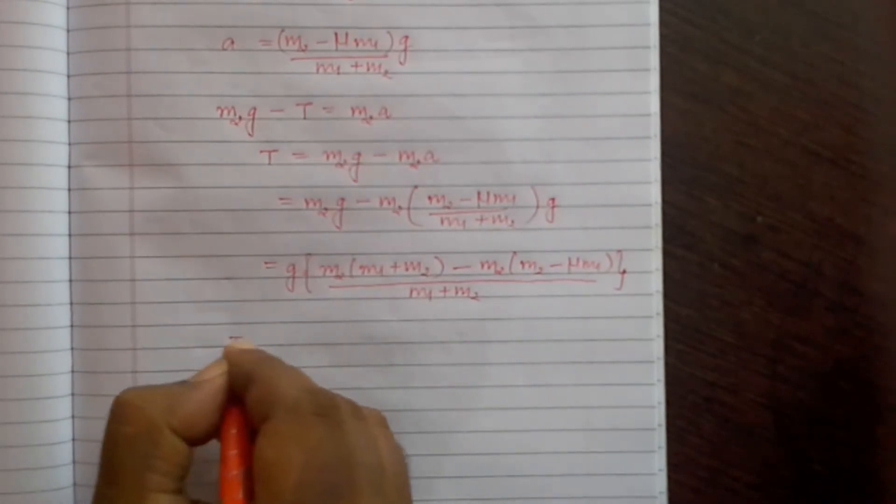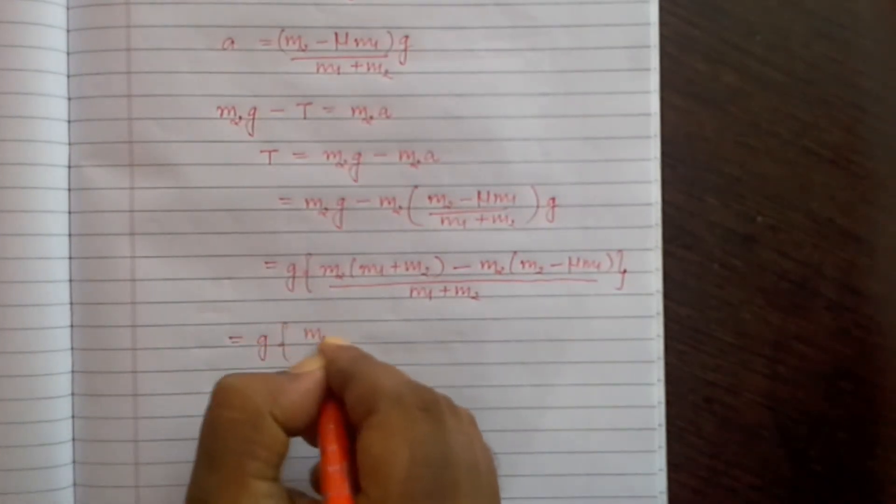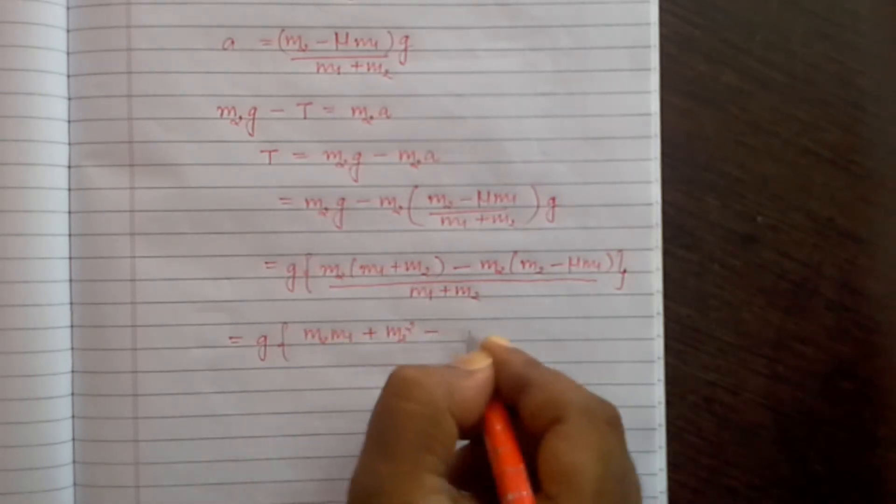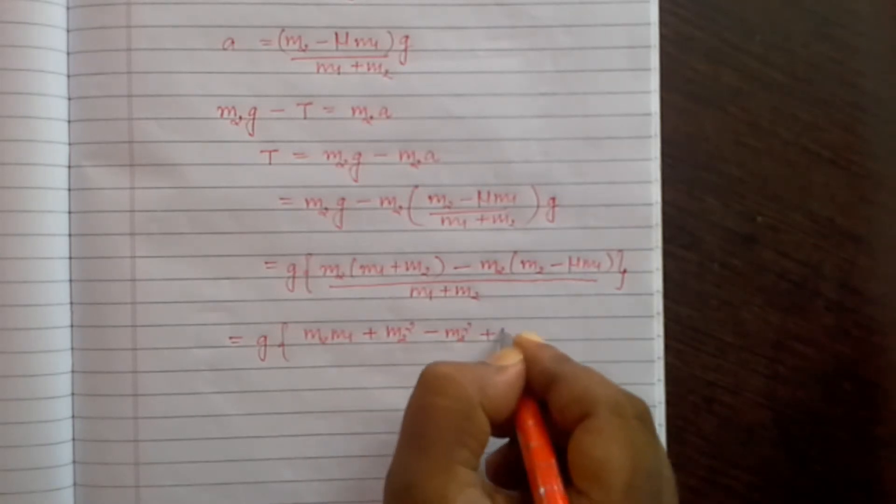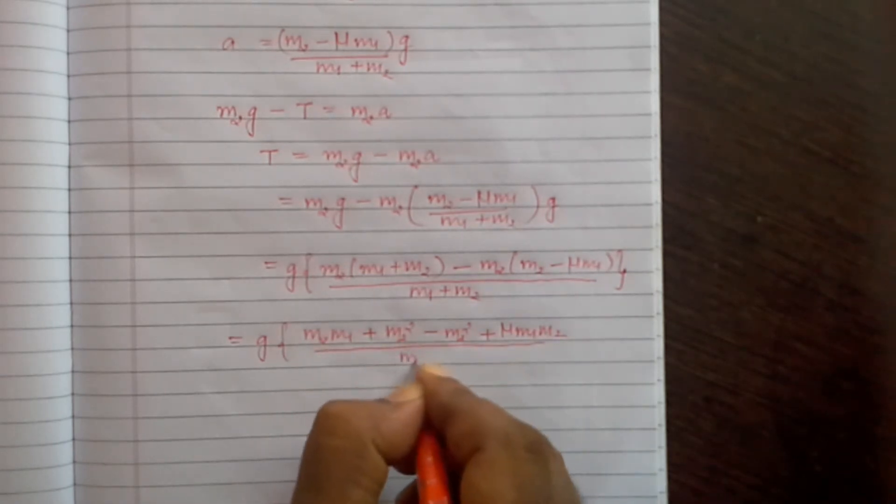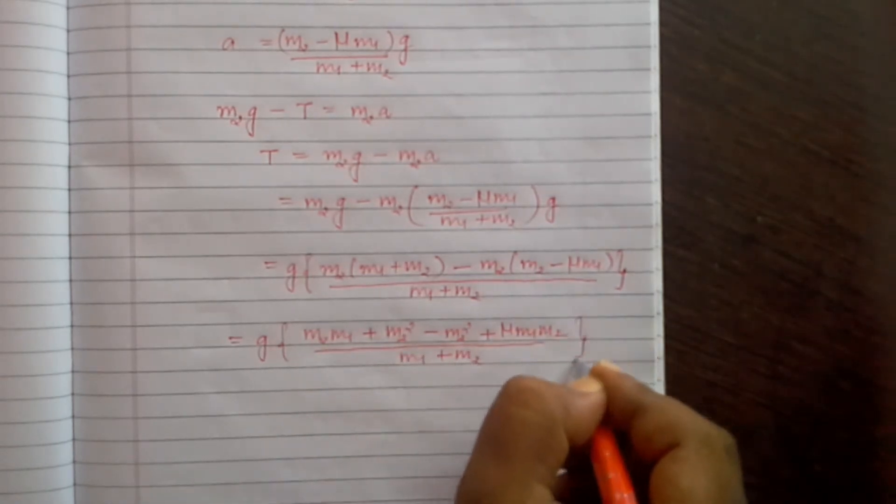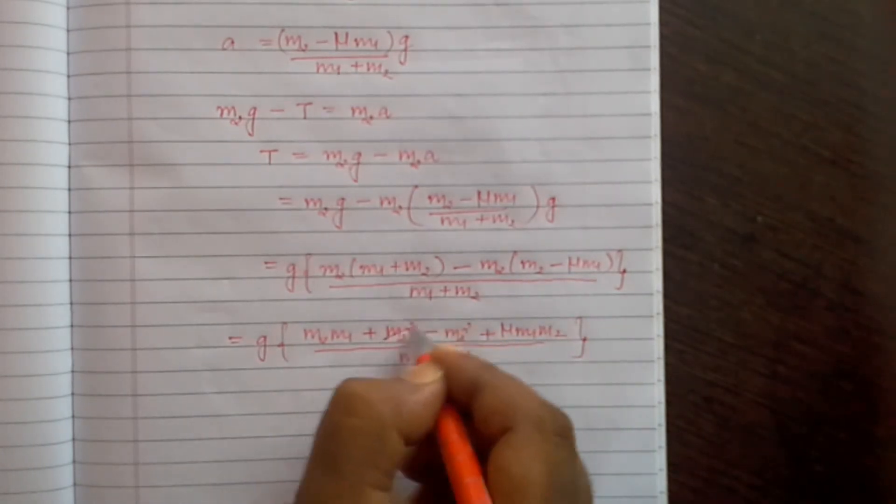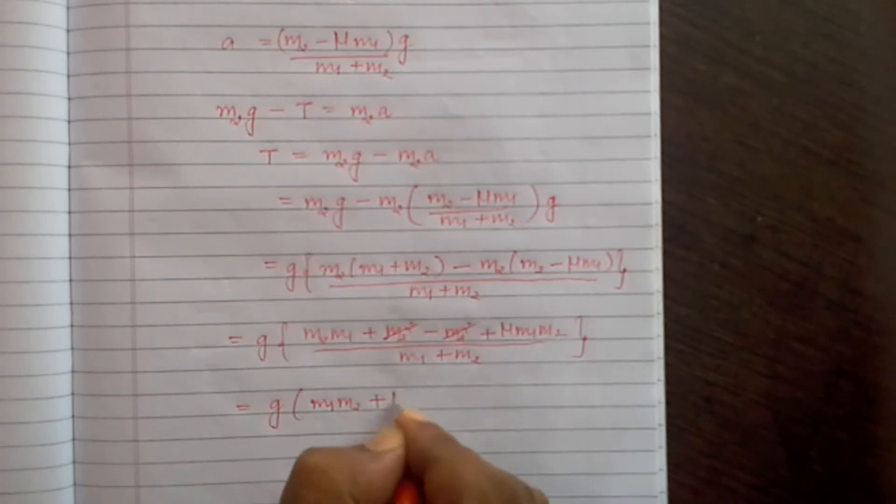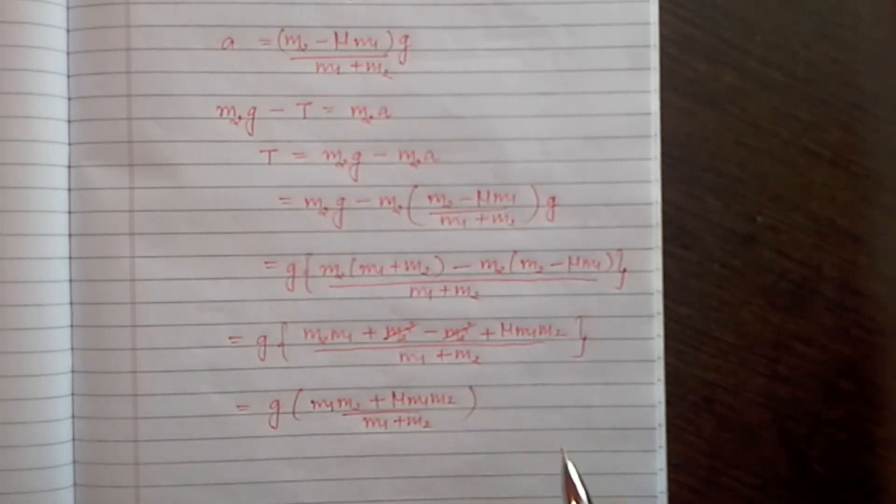Simplifying further, we get g into (M2M1 plus M2 squared minus M2 squared plus mu times M1M2) divided by (M1 plus M2). We can cancel M2 squared, and the result is g into M1M2 plus mu times M1M2, divided by (M1 plus M2).